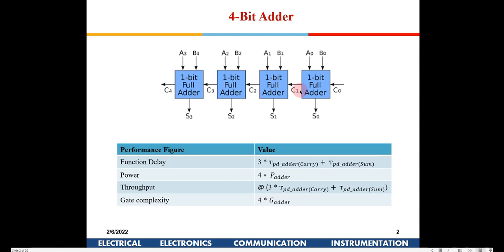If you recall from your VLSI course — for example in the 28-transistor full adder — the carry is generated first, then carry-bar is used to generate sum-bar. So the total delay of the 4-bit adder is three propagation delays for carry plus one sum delay: three T_carry plus one T_sum, because sum has slightly more propagation delay than carry.